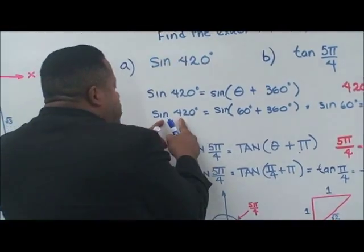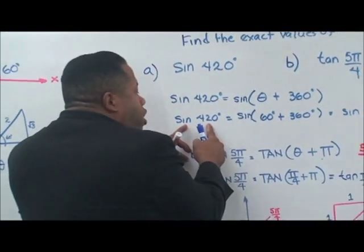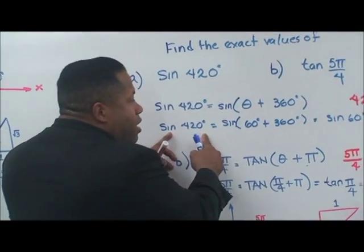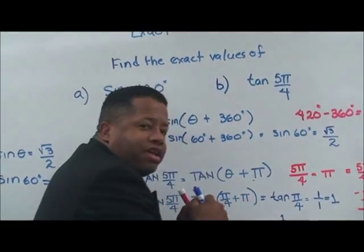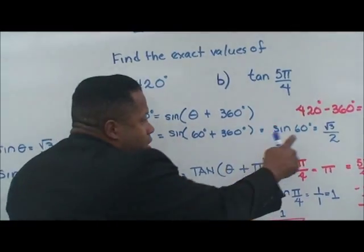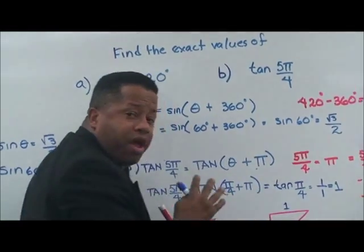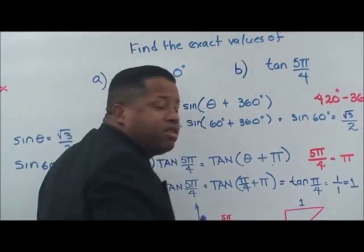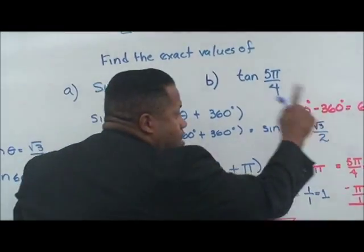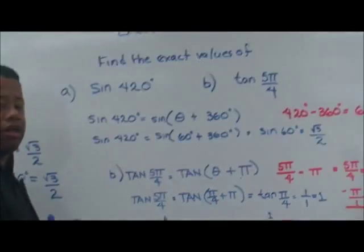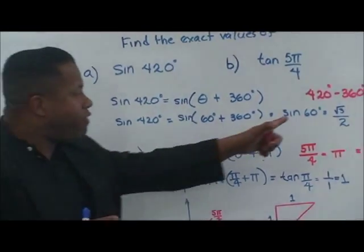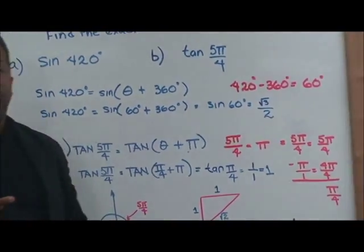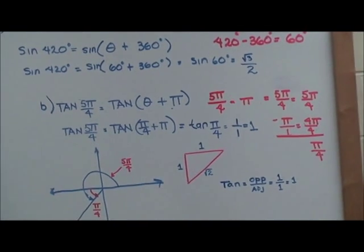So sine 420 degrees equals square root of 3 over 2. Sine 420 degrees is basically the same as sine 60 degrees — they correspond to one another, which gives you the same exact value: square root of 3 over 2.